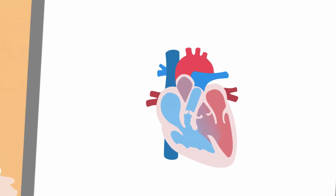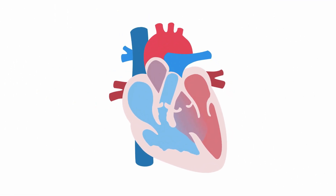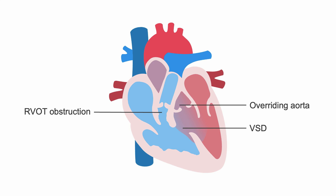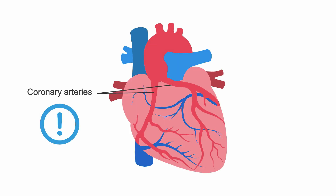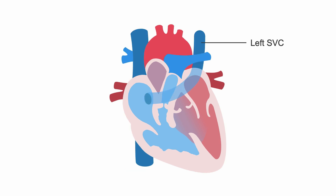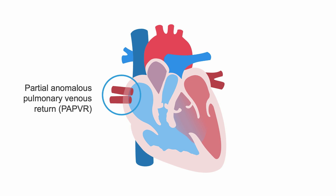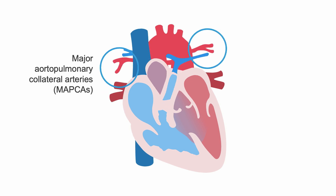The goals of ECHO for Tetralogy of Fallot are to define the anatomical features in detail. This includes assessing the degree and nature of right ventricular outflow tract obstruction, the location and size of the VSD or whether multiple VSDs are present, the degree of aortic override, and the degree of right ventricular hypertrophy. In addition, a full echocardiographic study should be performed to identify associated findings, including coronary artery anomalies, aortic arch anomalies, systemic or pulmonary venous anomalies, or the presence of aorto-pulmonary collateral vessels.